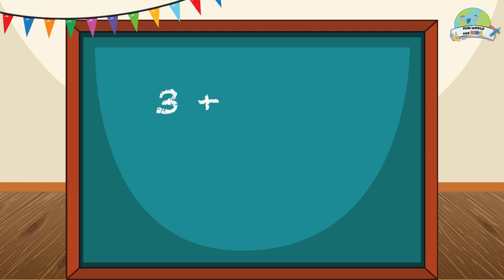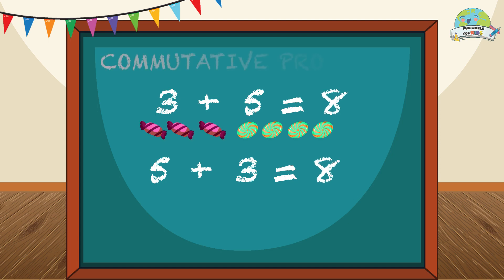Did you know that you can add numbers in any order and you will still get the same result? That is called the commutative property.